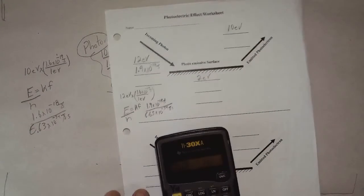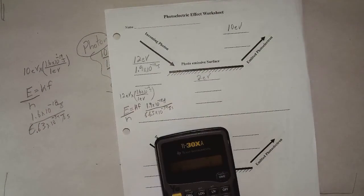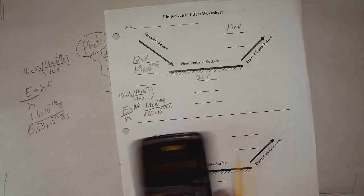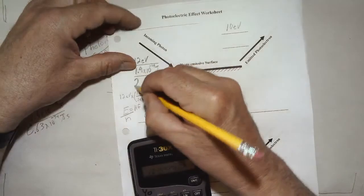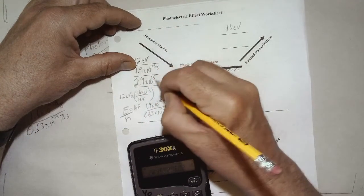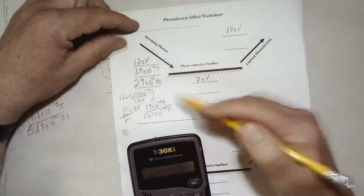So we have the number already here. Divided by 6.63 EE34 negative gives us 2.9 times 10 to the 15th hertz. 2.9 times 10 to the 15th hertz. Not so bad.